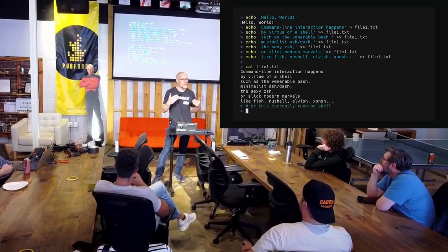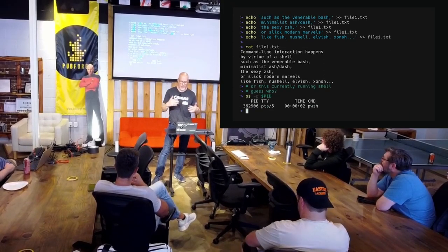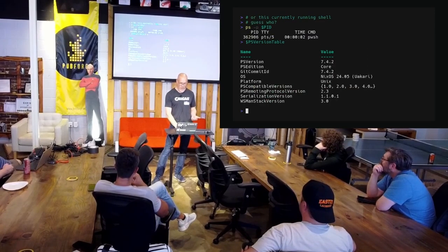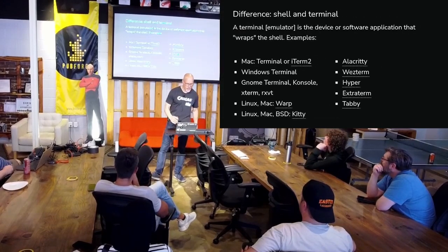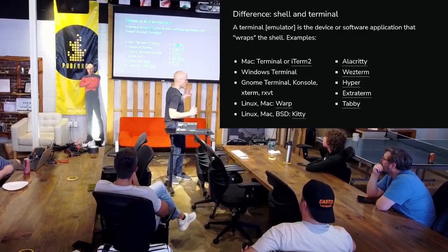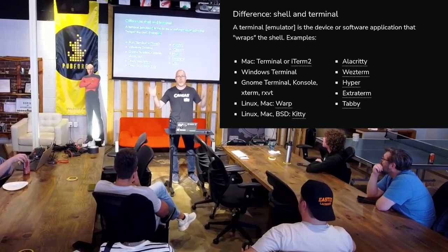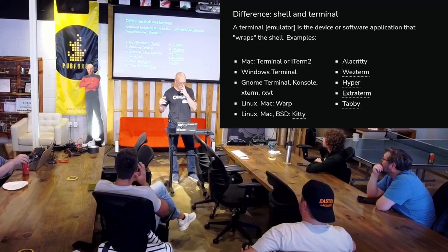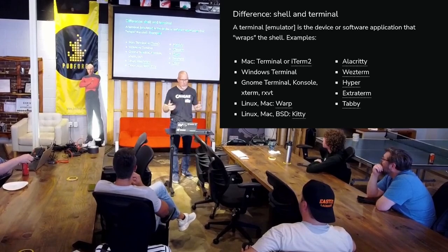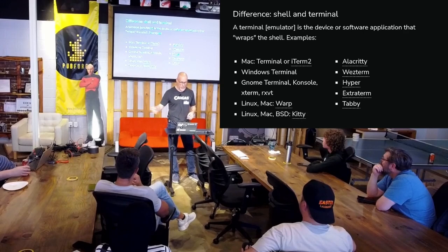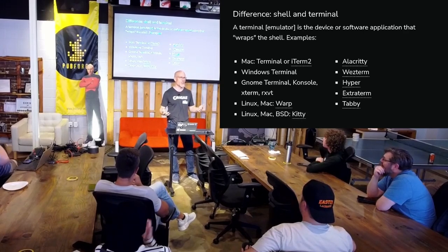You might be surprised at how similar basic operations look between PowerShell and other shells, and also that PowerShell works fine as a Linux shell. Let's talk about the difference between a shell and a terminal. A terminal — or terminal emulator — is a device or software application that wraps the shell. Examples include Terminal or iTerm2 on Mac, Windows Terminal on Windows, GNOME Terminal, Xterm, or RxVT on Linux and BSD.